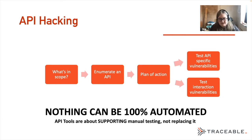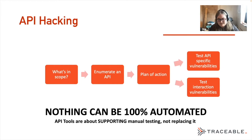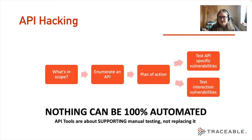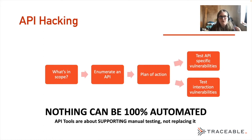Quite often I end up with either API-specific vulnerabilities — things like IDORs, BOLAs, misuse of assets — or I have interaction vulnerabilities. I test a lot of mobile apps, and often the mobile API doesn't expect you to try a cross-site scripting attack, because it's connected to Android components and it's not going to be vulnerable to XSS. Actually, that's sometimes not the case depending on how it works. You can use the mobile API to bypass protections that might exist on a desktop application.